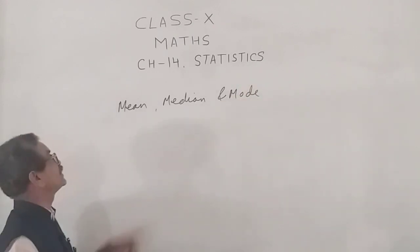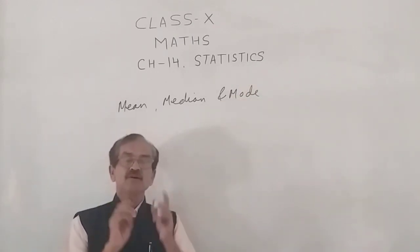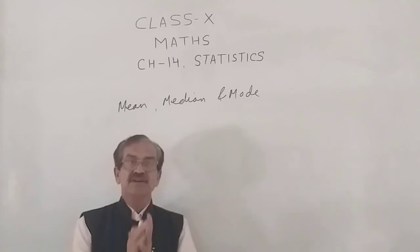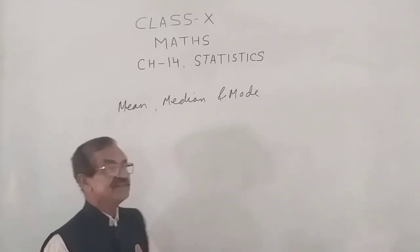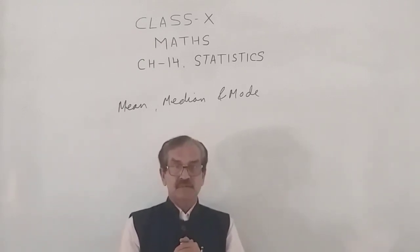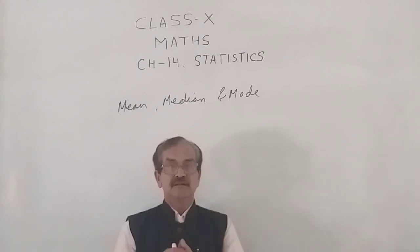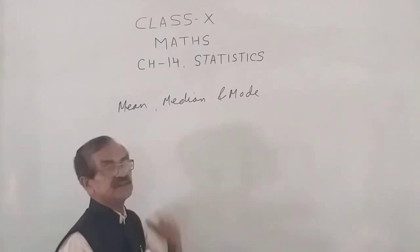The mean of the data is the average or the arithmetic mean. The median is the middlemost term. However, when we are doing grouped frequency distribution, we do not have the individual terms with us, but we know what term could be the median of the whole data.